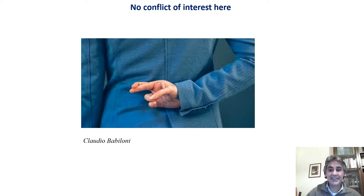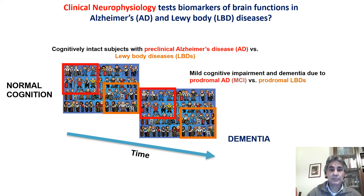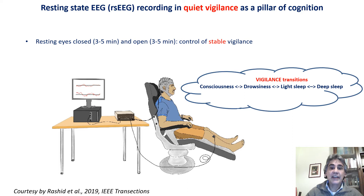In our studies, we tested the EEG biomarkers of neurophysiological mechanisms of quiet vigilance in Alzheimer's and Levy Body Disease patients, from preclinical stages without cognitive symptoms to the prodromal stages of mild cognitive impairment and then dementia. The EEG activity was recorded in the resting state, eyes closed and eyes open condition — an ideal condition to study the regulation of quiet vigilance.